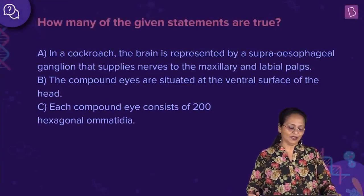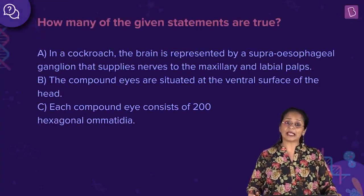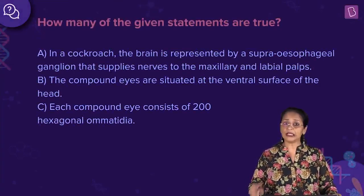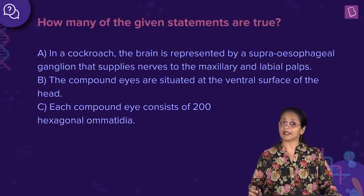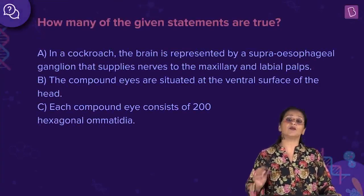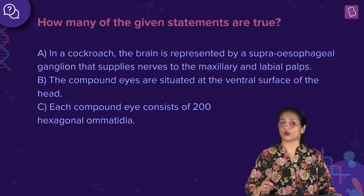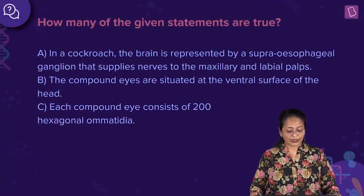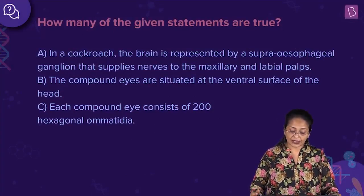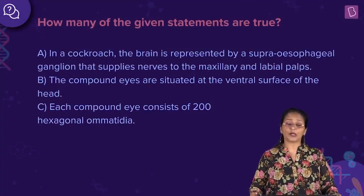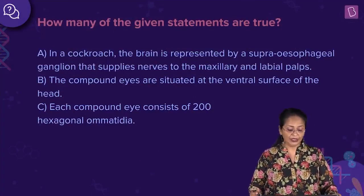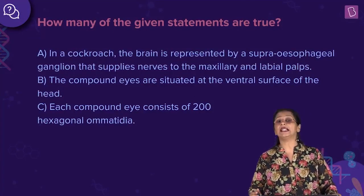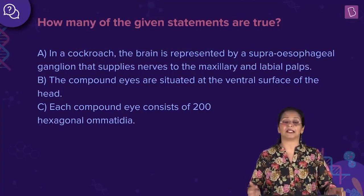Let us now look at this question: how many of the given statements are true? There are about three statements given here and we need to see how many of them are true. The first one: in a cockroach, the brain is represented by a supraesophageal ganglion that supplies nerves to the maxillary and the labial palps.